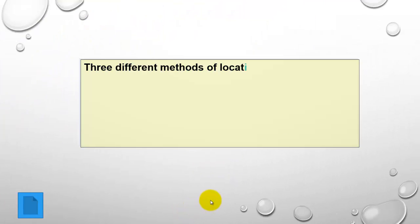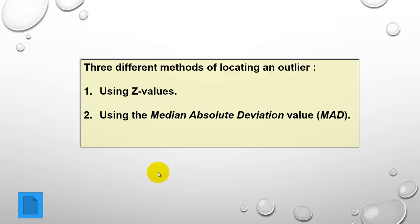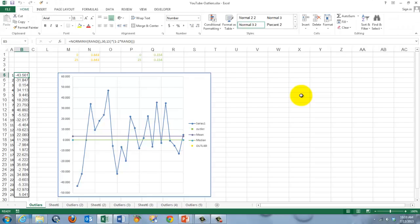I'm going to discuss three different methods of locating an outlier. The first one, which I don't think is the best, is based on Z-values. The other one is based on the Median Absolute Deviation value, MAD. And then Tukey the statistician introduced an interquartile range method, IQR — I think that's the best one. Let's test them in Excel.